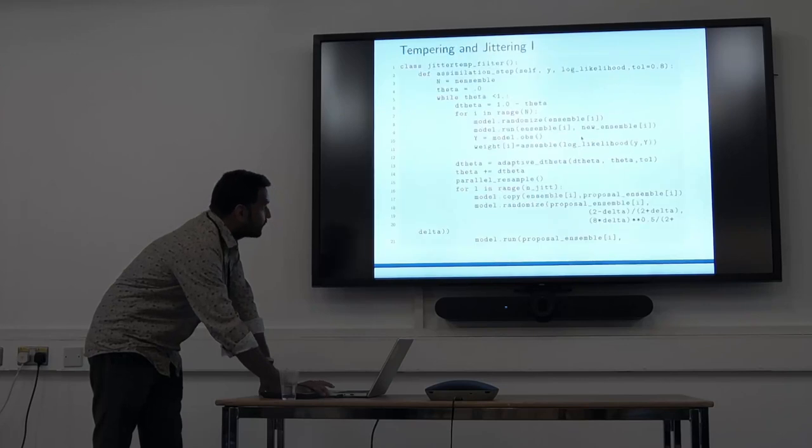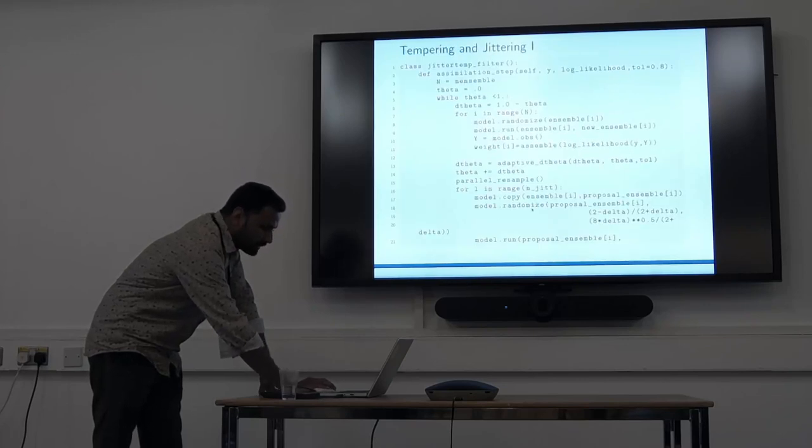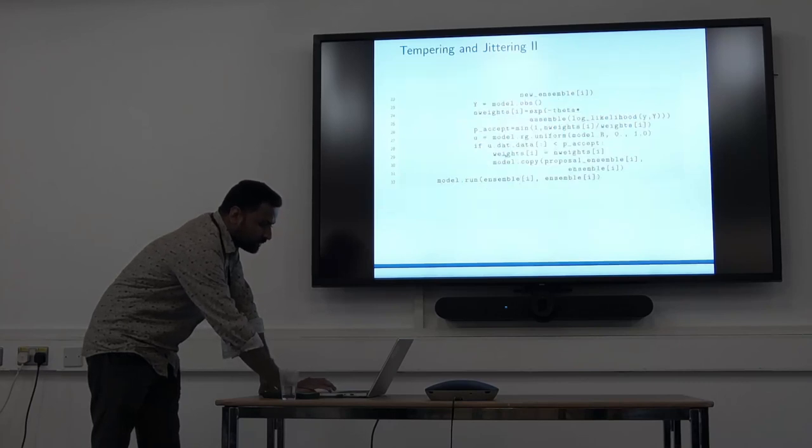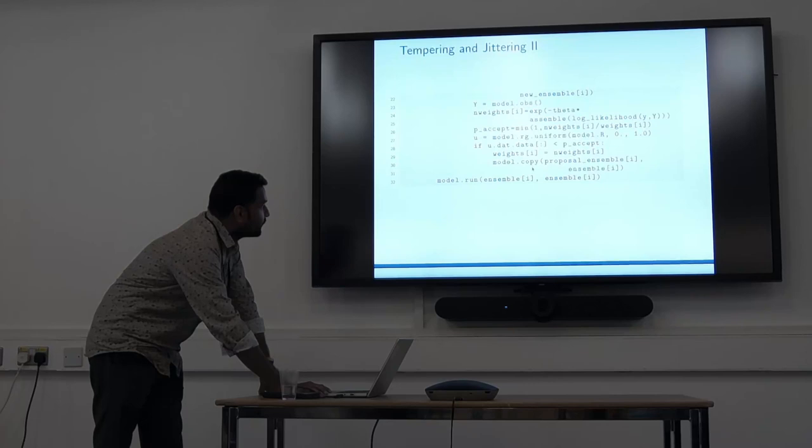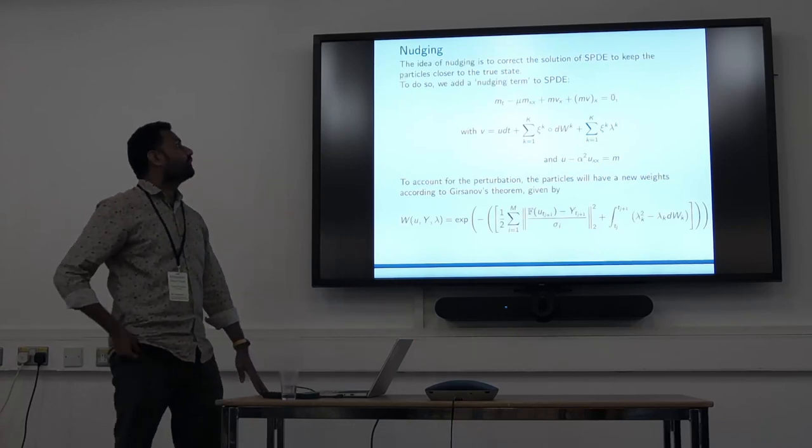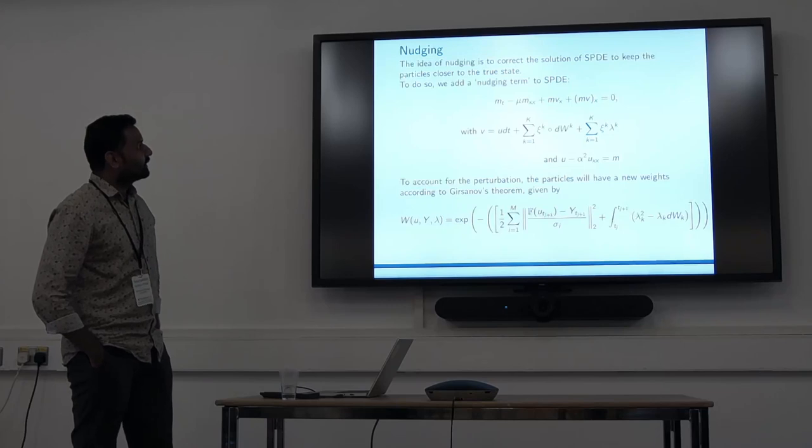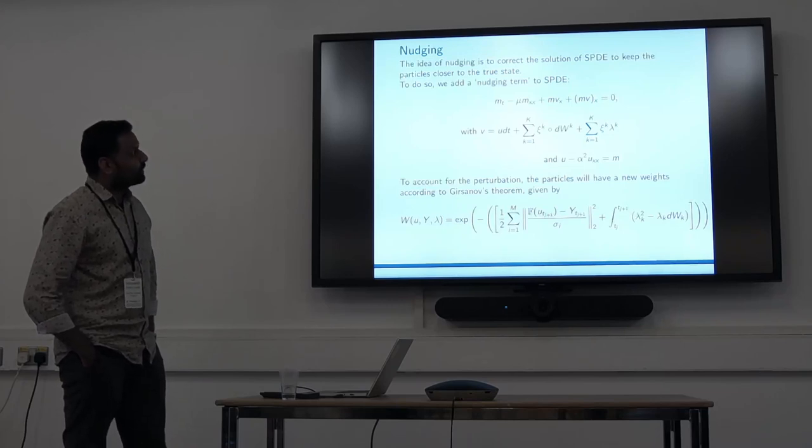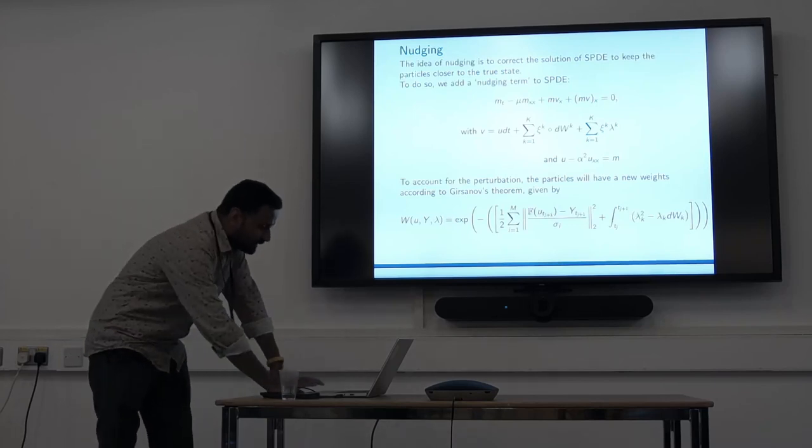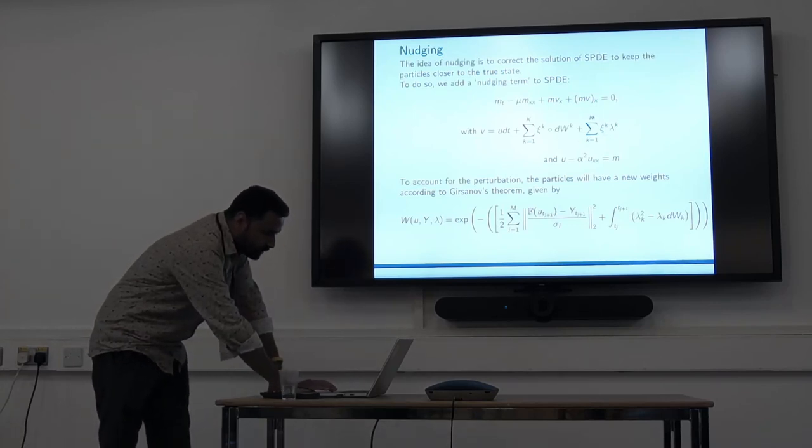The jittering loop randomizes with new noise from old noise, then we can use MCMC algorithms to have accept and reject cases. We determine which is going to be accepted and which is rejected, then we model run. If it still doesn't work, we can do nudging. Nudging nudges the data to correct the solution to keep the particles closer to the true state. This can be done by adding a new term.